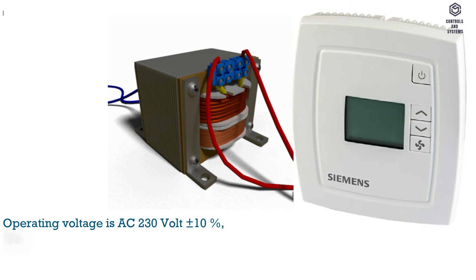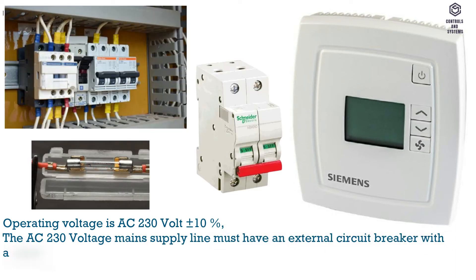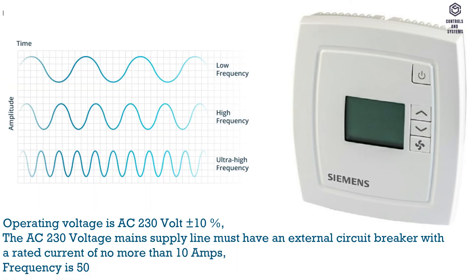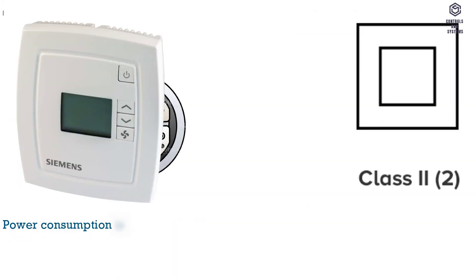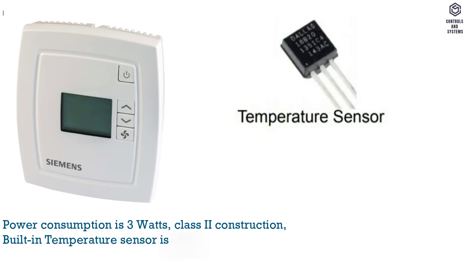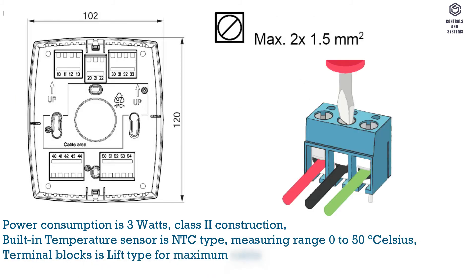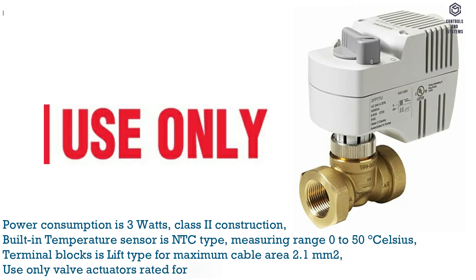Technical data — operating voltage: AC 230 V ±10%. The AC 230 V main supply line must have an external circuit breaker with a rated current of no more than 10 amps. Frequency is 50 or 60 Hz. Power consumption is 3 W, Class 2 construction. Built-in temperature sensor is NTC type, measuring range 0–58°C. Terminal blocks are lift type for maximum cable area 2.1 mm². Use only valve actuators rated for AC 230 V.